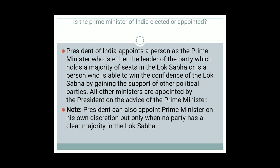Is the Prime Minister of India elected or appointed? The President of India is the Constitutional Executive Head, while the real executive authority of the Union is exercised by the Prime Minister and his Council of Ministers. The President appoints a person as Prime Minister who is either the leader of the party which holds a majority of seats in Lok Sabha, or a person who is able to win the confidence of Lok Sabha by gaining the support of other political parties. All other Ministers are appointed by the President on the advice of the Prime Minister.